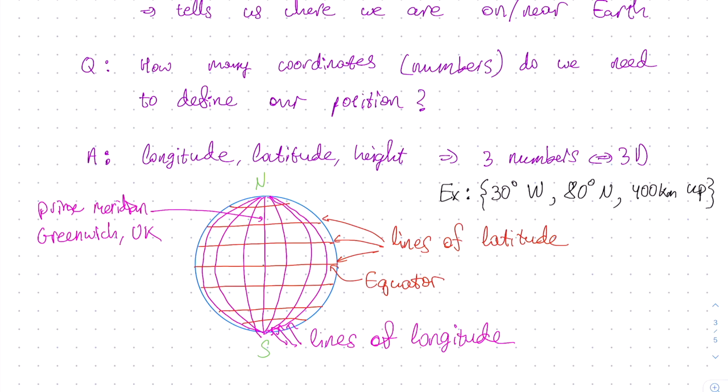We start off on the prime meridian, and travel to the west by 30 degrees. Then we go north by 80 degrees, and find our position on the surface of the globe. Finally we go up 400 kilometers, and find our position in 3D space, and that is the position of our satellite.